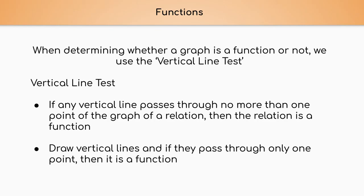The way we're going to determine whether a graph is a function or not is we're going to use the vertical line test. It states: if any vertical line passes through no more than one point of the graph of a relation, then the relation is a function. We're going to draw vertical lines, and if they pass through only one point, then it is a function.